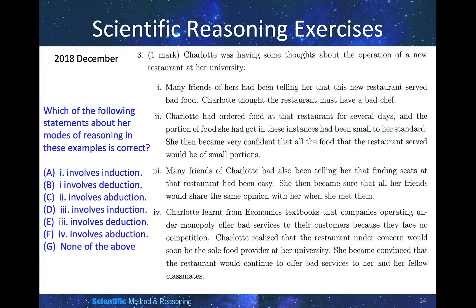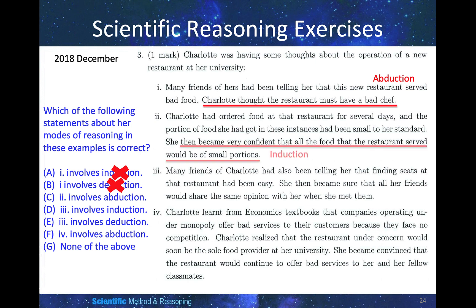December 2018. Charlotte was having thoughts about a new restaurant at her university. Many friends had been telling her that this new restaurant served bad food. Charlotte thought the restaurant must have a bad chef. This is abduction because it is a guess — the bad food could be due to poor ingredients, not necessarily the chef. Charlotte then ordered food at the restaurant for several days, and the portions she received were small by her standard. She became very confident that all food at that restaurant would be of small portions. Based on her own experience, she generalized — so this is induction.